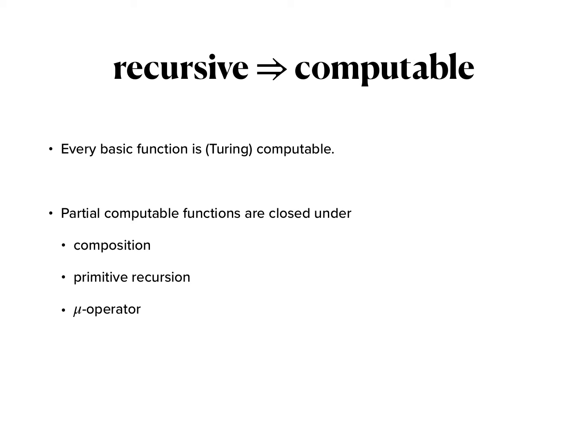It is now possible to show that every partial recursive function is partial computable. This works by showing that every basic function is Turing computable—we've already discussed this in class—and then you show that the partial computable functions are closed under composition, primitive recursion and the μ-operator. And that means that the family of partial Turing computable functions contains the partial recursive functions.